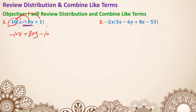This time we have four terms inside the parentheses: 3x, negative 6y, positive 8z, and negative 53. We're using negative 2x, multiplying with every single one of them. Negative 2x times 3x is negative 6x squared — x times x is x squared because you have two of them, so it's an exponent of 2.